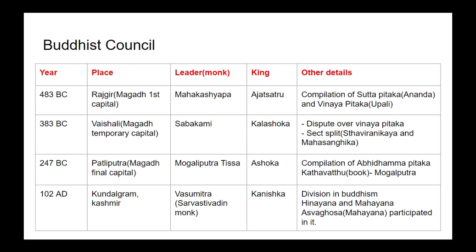The four major Buddhist councils took place at different times. The first council happened just after the death of Buddha in 483 BC at Rajgir, under the leadership of Mahakasyapa; the king who gave patronage was Ajatashatru. In this council, the compilation of Suttapitaka by Ananda and Vinayapitaka by Upali took place. The second council happened around 383 BC at Vaishali, under the leadership of Sabakami; the king was Kalashoka. This council was called to resolve a dispute over the Vinayapitaka, and after it, different schools emerged and there was a sect split.